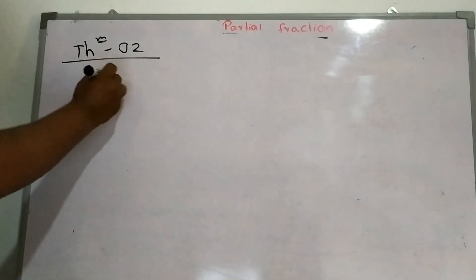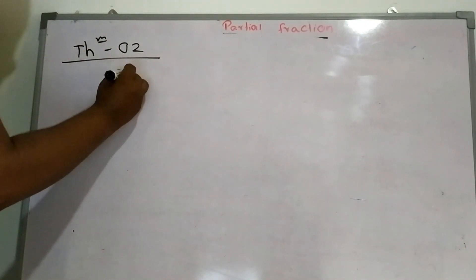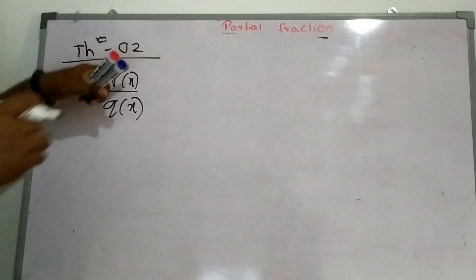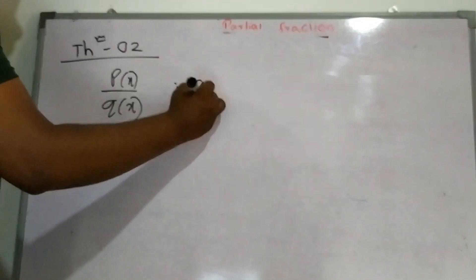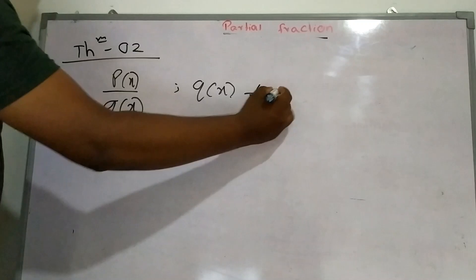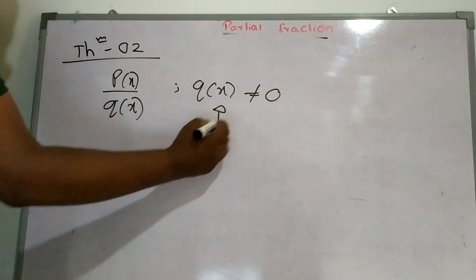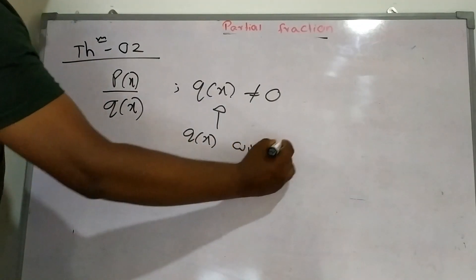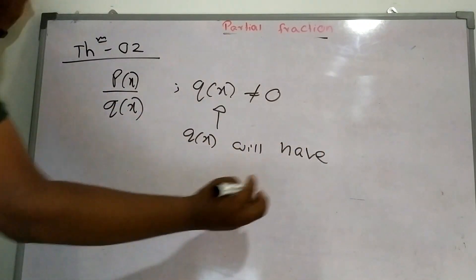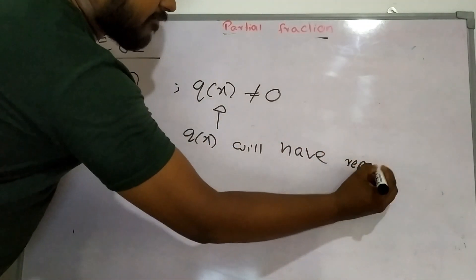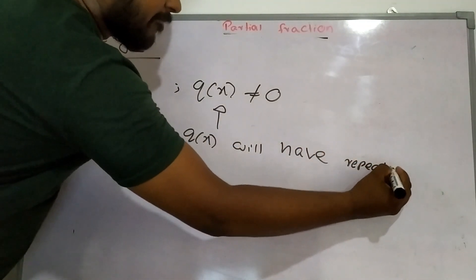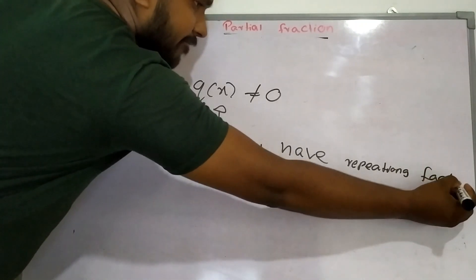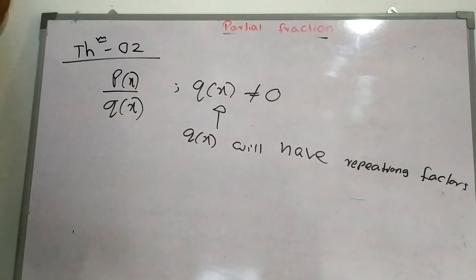In this theorem, we will start with P(x) over Q(x), but Q(x) is not equal to 0, and Q(x) will have repeating linear factors.